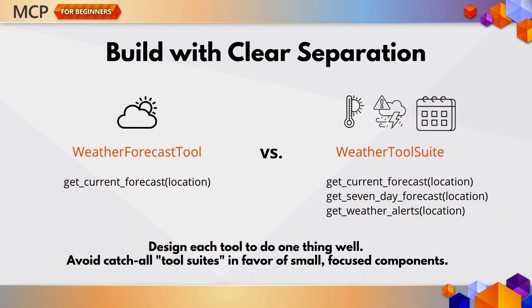Let's start with architecture. One of the most important principles to follow is single responsibility. Each tool should do one thing and do it well. This keeps your code cleaner, your APIs more predictable, and your tools easier to test and maintain. Instead of creating one mega tool that tries to handle forecasts, alerts, history, and more, you should break it out into small, focused components. This makes your tools more modular and reusable across workflows.